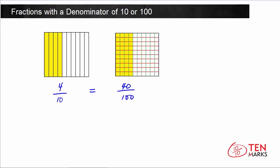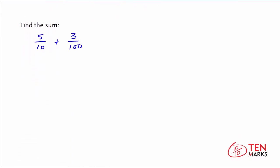Now let's solve an addition problem with these types of fractions. So I've got a new problem written below, and we want to find the sum: 5 tenths plus 3 one hundredths.